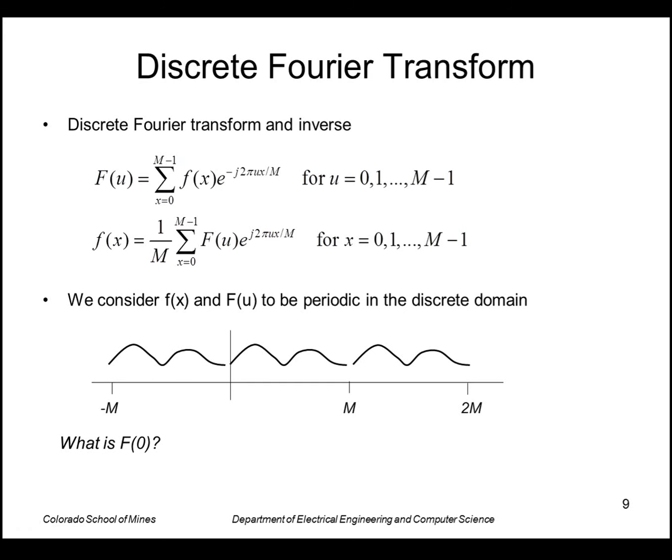The discrete Fourier transform is very similar except we use summations instead of integrals. So we're summing from x equals zero to x equals m minus one, so we have m total values of the original function, and that's also how many values are in the transform function.